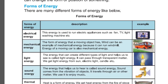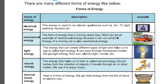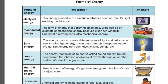Forms of energy. There are many different forms of energy. Electrical energy is used to run electric appliances such as fans, TVs, lights, and washing machines. Mechanical energy is the form of energy that a moving object has. Wind can be an example of mechanical energy because it can run a windmill. The energy of a moving car is also mechanical energy.